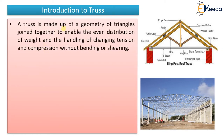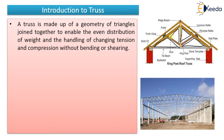A truss is made up of a geometry of triangles joined together to enable even distribution of weight and handling of changing tension and compression without bending and shear. If you observe it properly, there is one triangle here and another triangle here. If you take a typical truss member, it will have certain triangles. Even in this example you can see there are so many triangles.